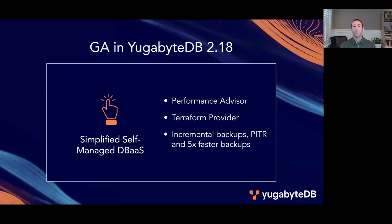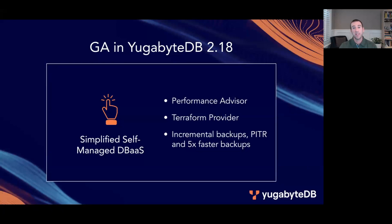Finally, we have a number of updates to simplify operations with YugabyteDB Anywhere. This software is important as many organizations want to embrace the benefits of DBaaS, but for a variety of reasons they need to retain control of their infrastructure, security, and operations. This release introduces our intelligent performance advisor to YugabyteDB Anywhere — a built-in tool that provides guidance on schema design, connections, indexes, query load, and more. We are also introducing a new Terraform provider to help automate and simplify the deployment and management of self-managed YugabyteDB onto public cloud infrastructure.